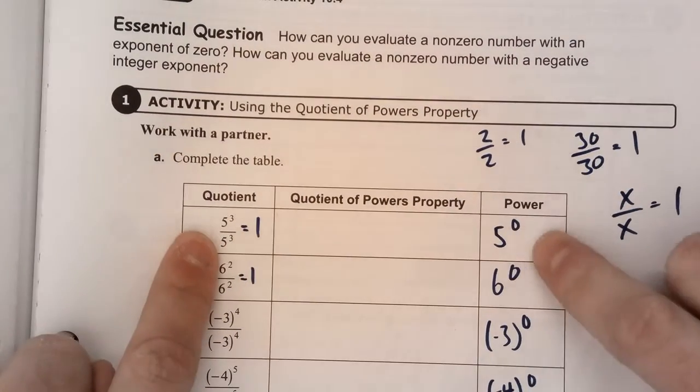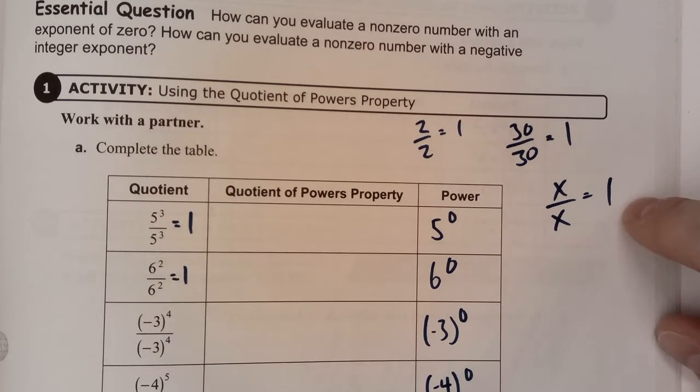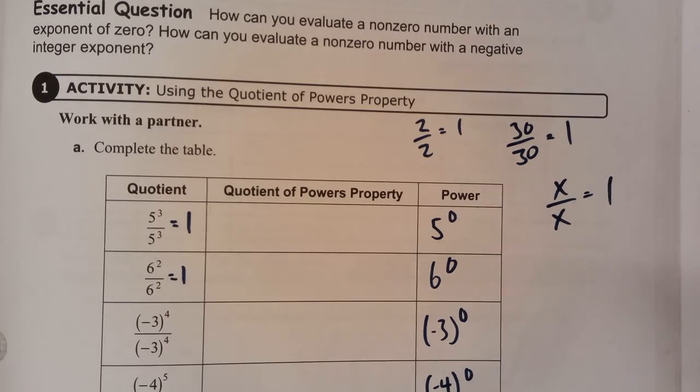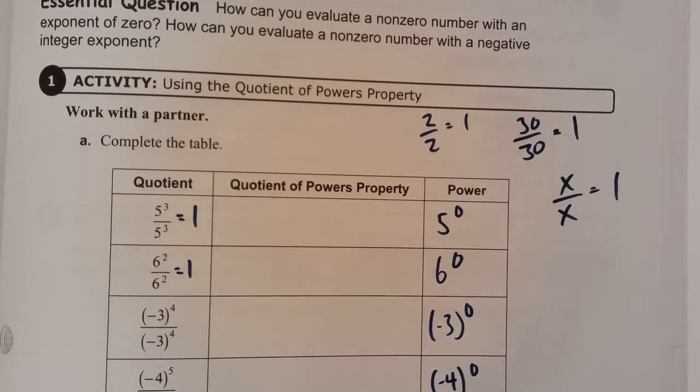Therefore, anything to the zero power is equal to 1. So yeah, hopefully that sheds some light as to why something to the zero is 1. But even if it doesn't, it's just one of those silly things to just remember. Anything to the zero power is 1. Okay, thanks for playing.